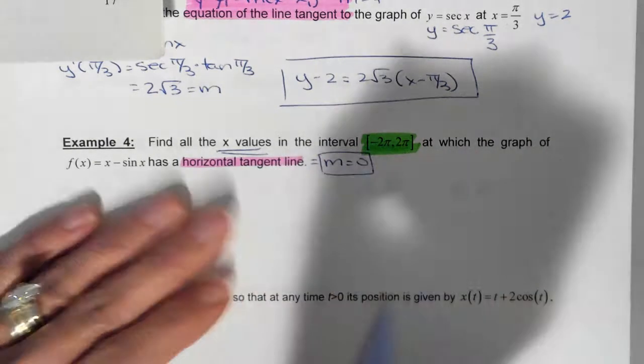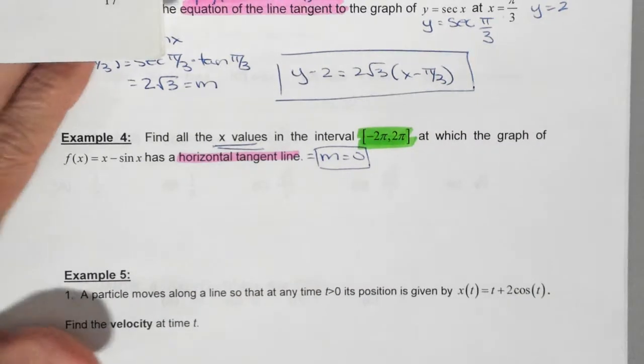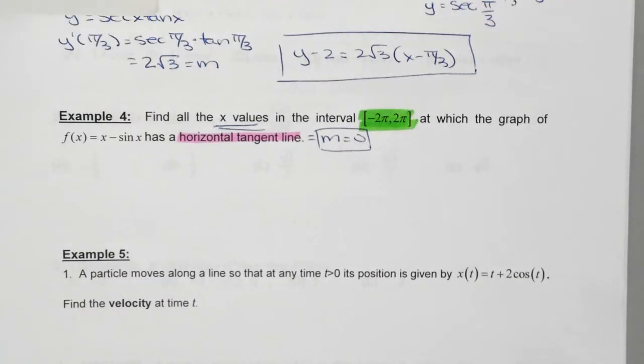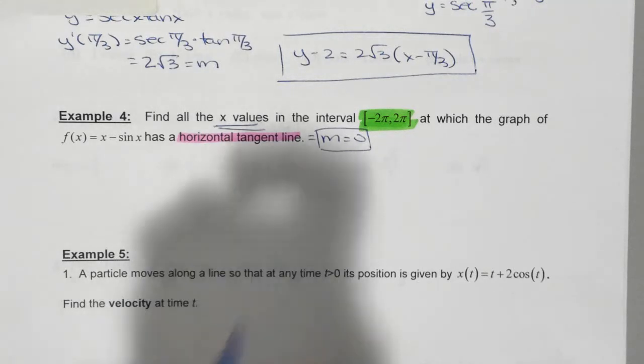This is important because when you are reading an FRQ or any free response question, it will not say, by the way, the slope is zero. You have to read into it. You have to know what this means. If I said to you has a vertical tangent line. What does that mean about the slope? We're going to get to that eventually. So it's important that you understand the terminology.